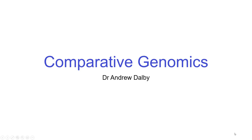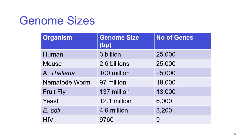Let's take a quick look at comparative genomics. The first thing to think about is genome size. The human genome has 3 billion bases but only 25,000 genes. The mouse has 2.6 billion bases and 25,000 genes. Arabidopsis thaliana, which is mouse-eared cress, has 100 million bases in genome size and 25,000 genes. So you can have a dramatic change in genome size without really changing the number of genes very much.